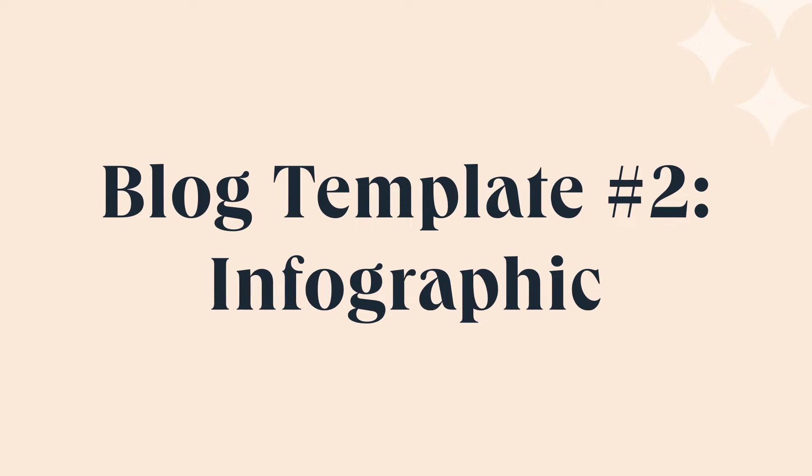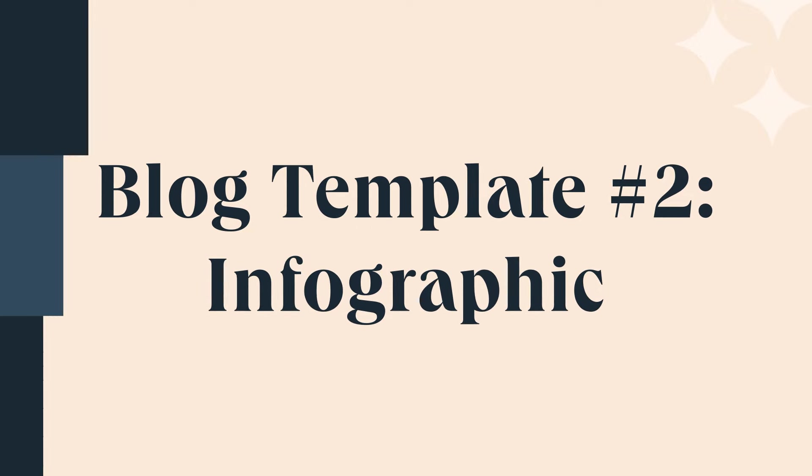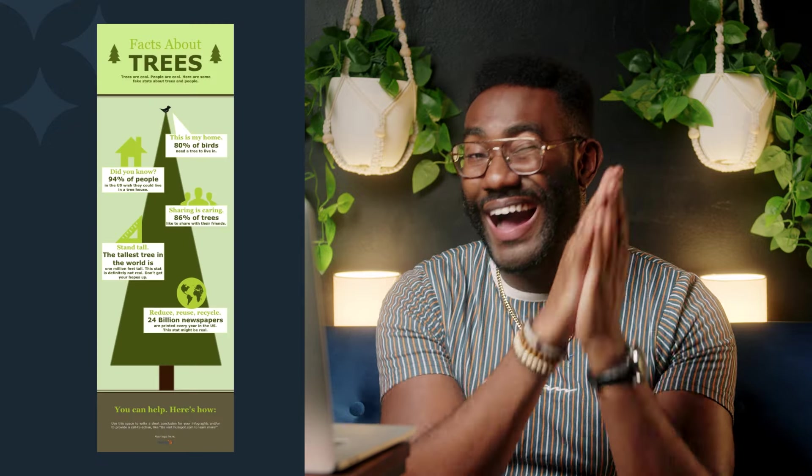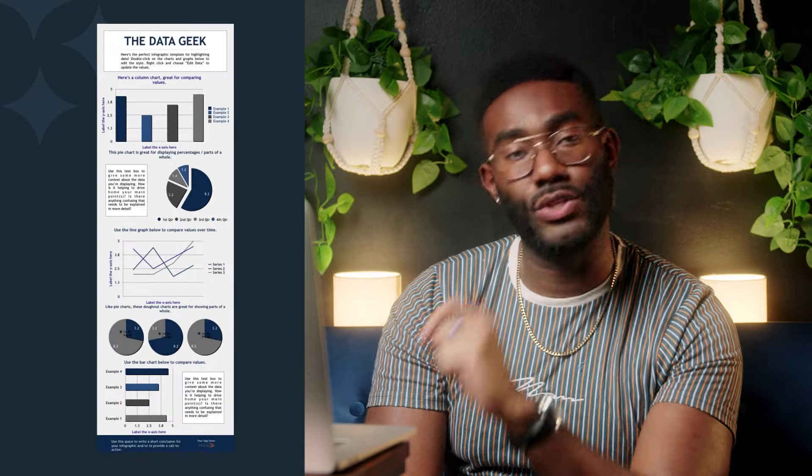Now we know how to use the AI assistant. Let's move on to blog template number two: the infographic. This is personally one of my favorite types of content. An infographic is a great way to grab your audience's attention with highly visual content, compelling copy, and useful data. While you'll typically use less copy than a traditional blog post, your content must still be engaging and full of valuable information to keep them reading.